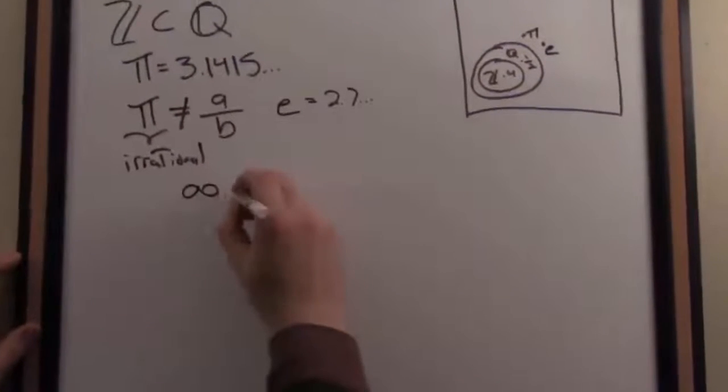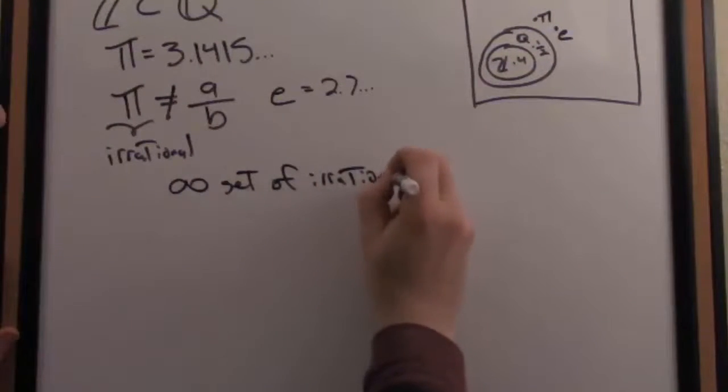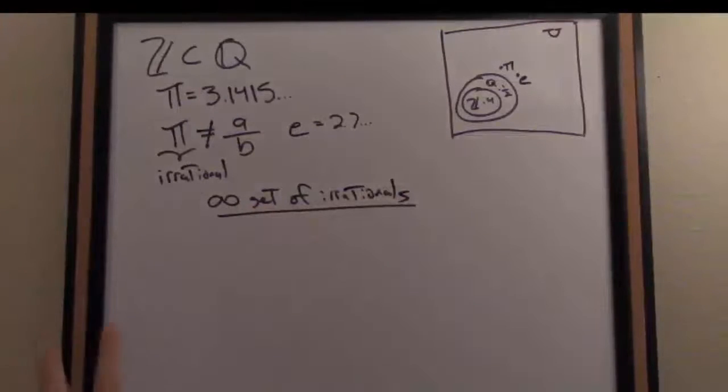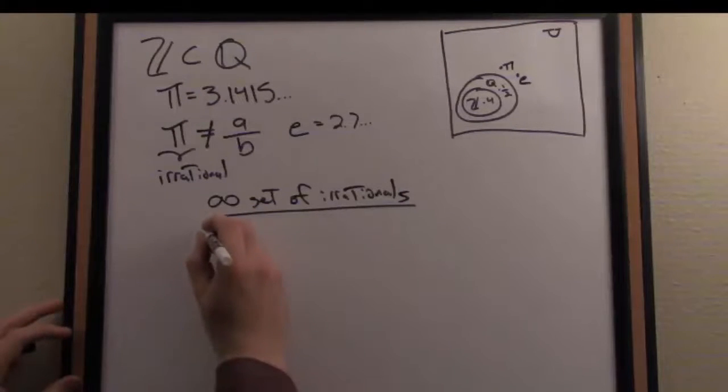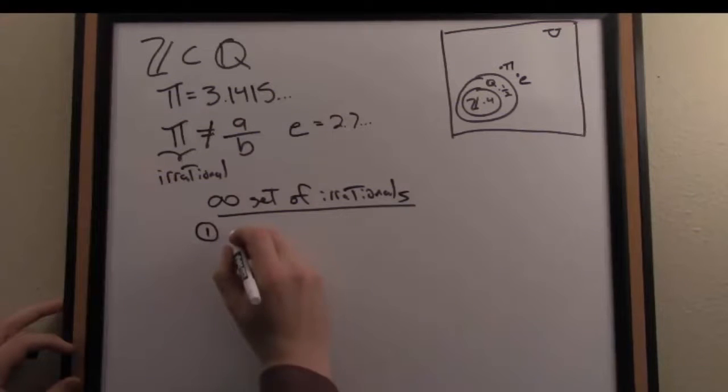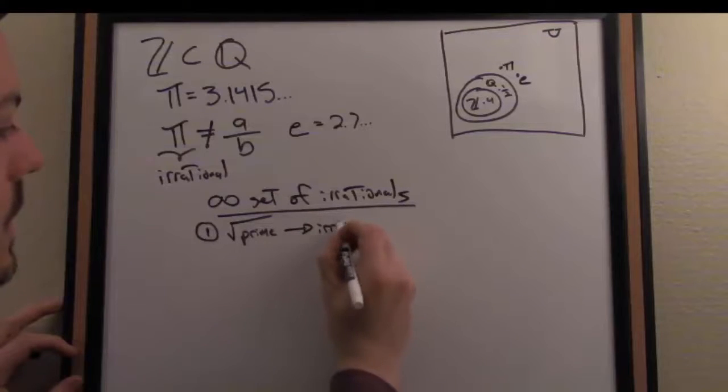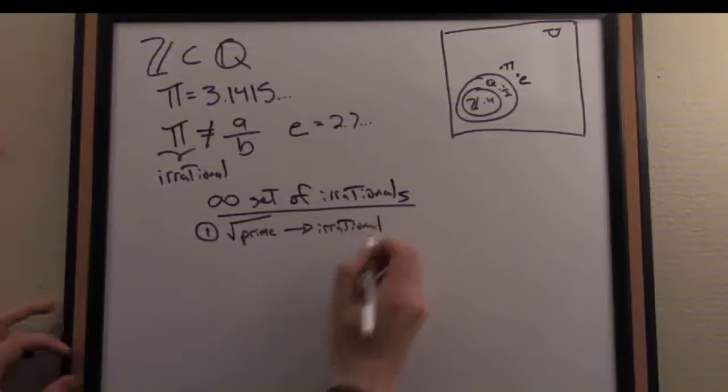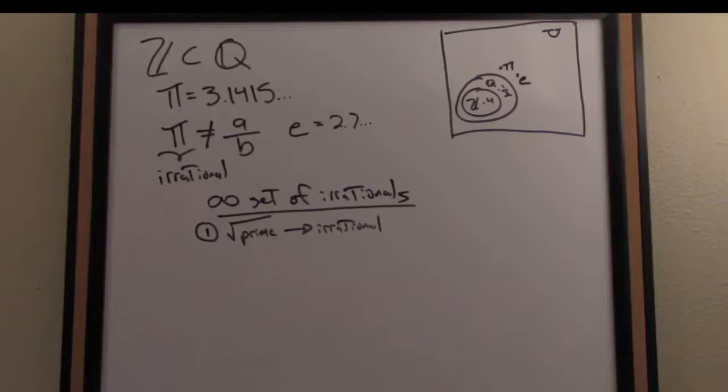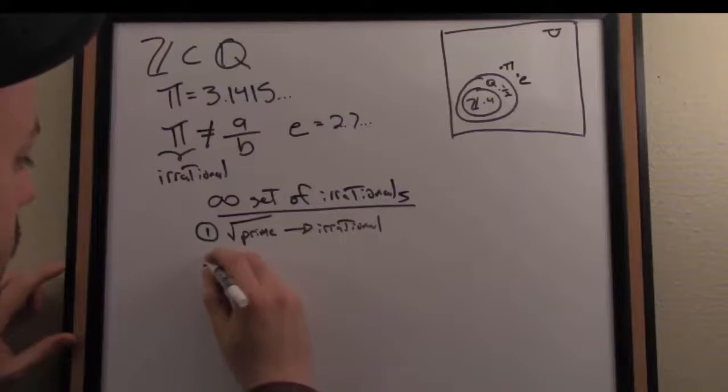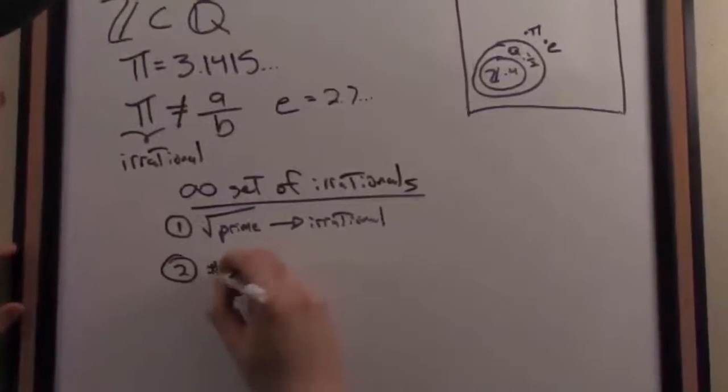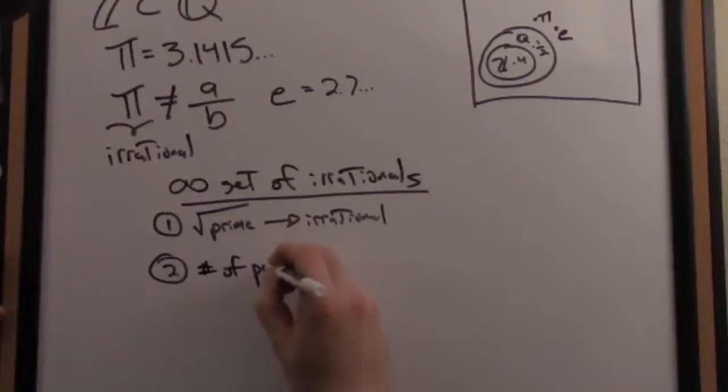So e is also out here. In fact, there's an infinite set of irrational numbers. How can I argue that there's an infinite set of irrational numbers? One fact is that if you take the square root of a prime number, you get an irrational result. Its decimal expansion, in other words square root of a prime, is non-repeating and non-terminating, infinite decimal expansion.